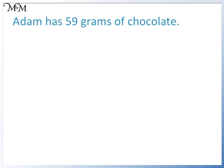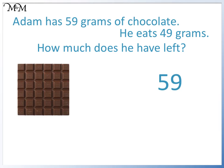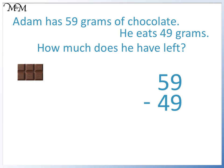Adam has 59 grams of chocolate. He eats 49 grams. How much does he have left? We are doing a subtraction. He starts with 59 grams and we take away 49 grams. We will do a subtraction to see how much he has left. 9 take away 9 equals 0 and 5 take away 4 equals 1. There are 10 grams left.